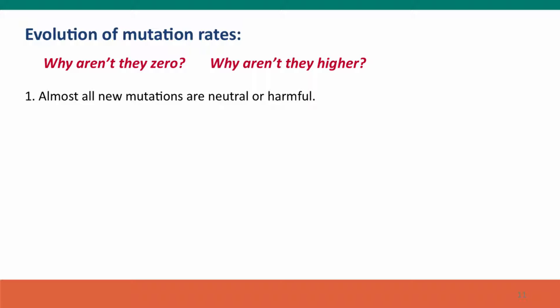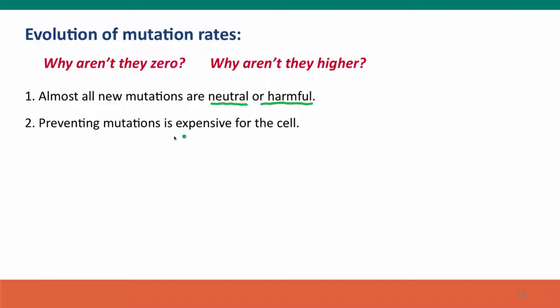Factors we have to consider are: first, that almost all new mutations are neutral or harmful — new mutations are rarely beneficial. Second, preventing mutations is expensive for the cell. DNA polymerase hardly ever makes mistakes, but if it's going to be even more careful, it would have to go slower. We'd have to spend more time proofreading, saying, like an obsessive compulsive, did I check that base enough times? Maybe I should go back and check it one more time.